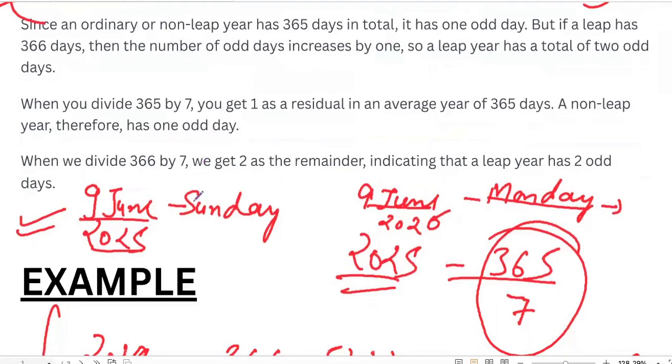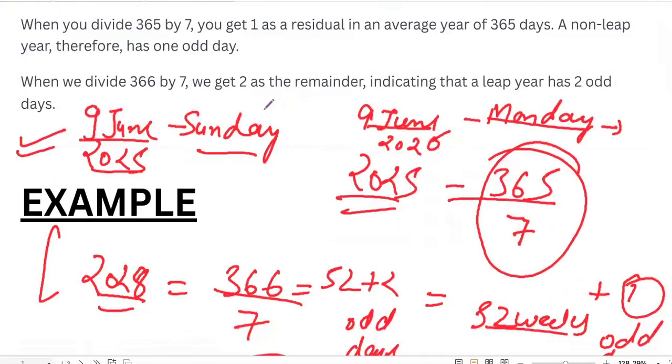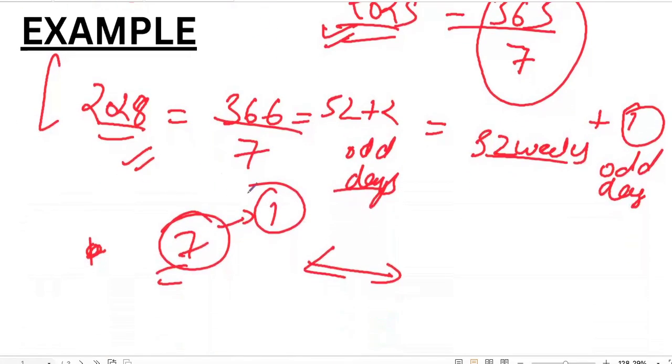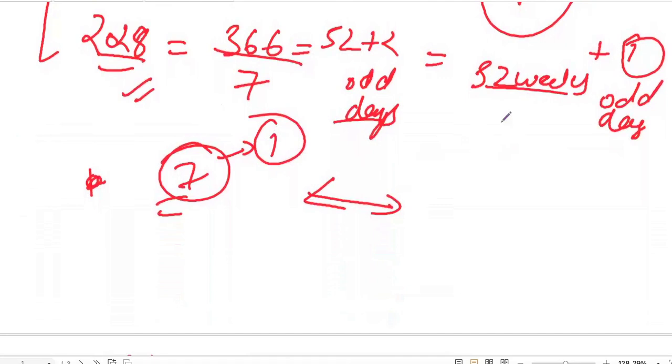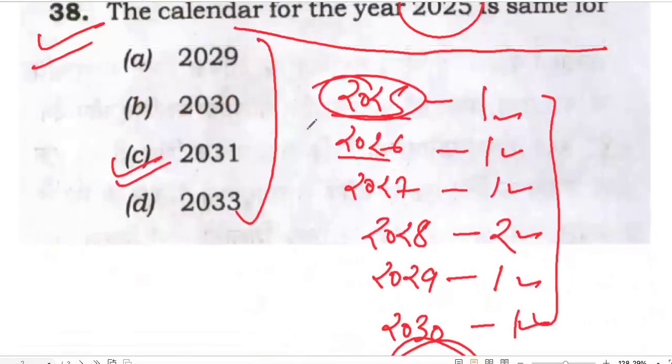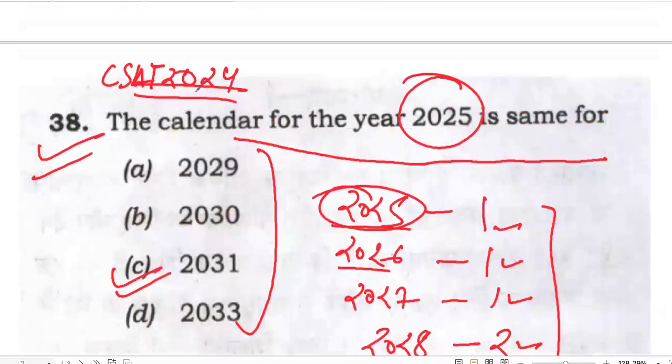Again see the concept. You have to calculate number of odd days. For a normal year like 2025, the number of odd days is 1. For a leap year, the number of odd days is 2. And the calendar changes because of this odd day only. If the number of odd days becomes 7, then 2 years calendar become identical. And this is the concept which was used in CSET 2024 question. I hope things are clear.